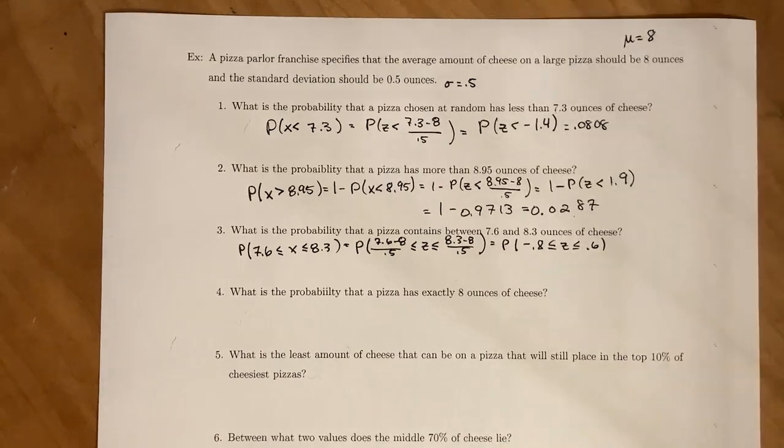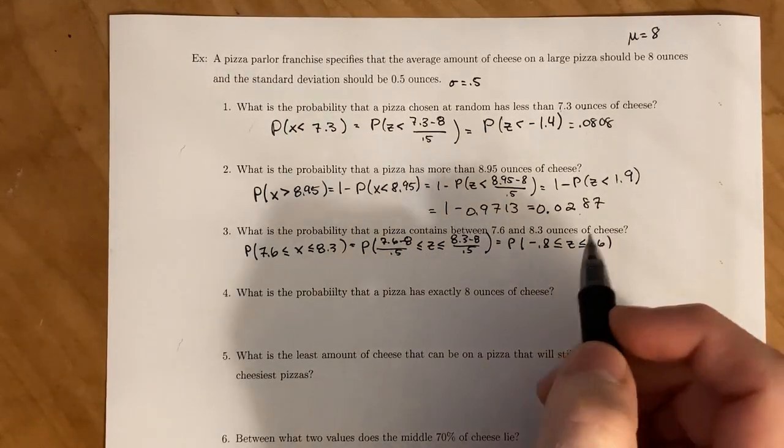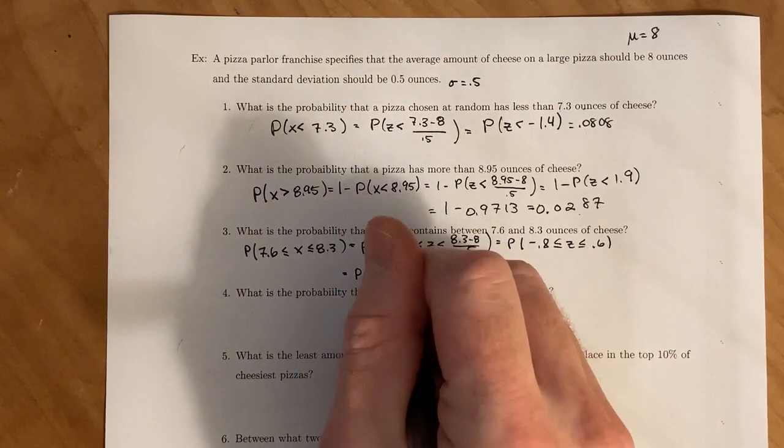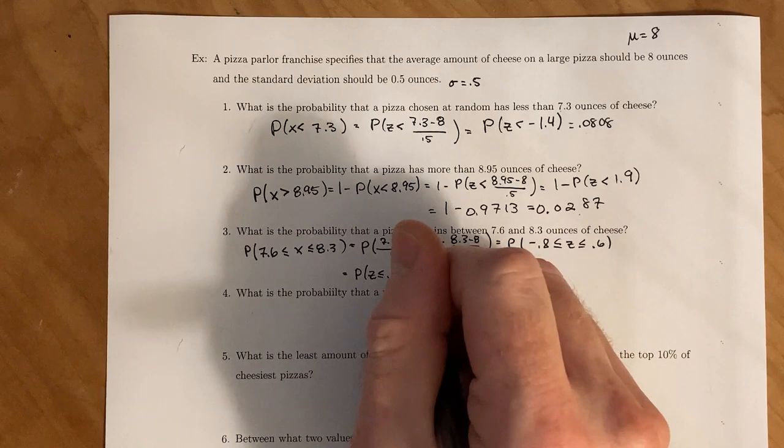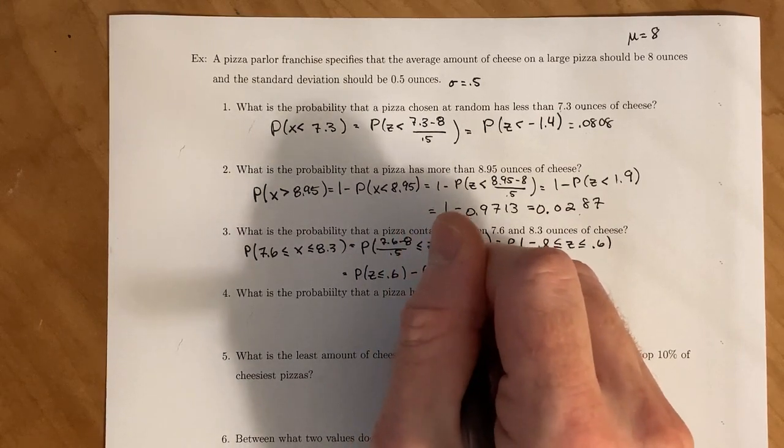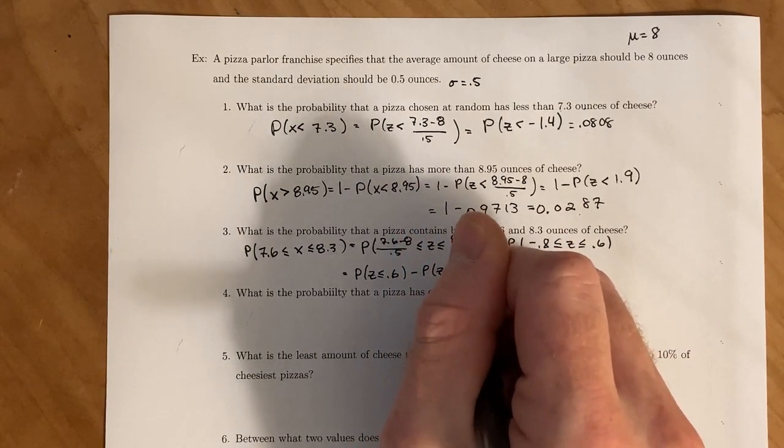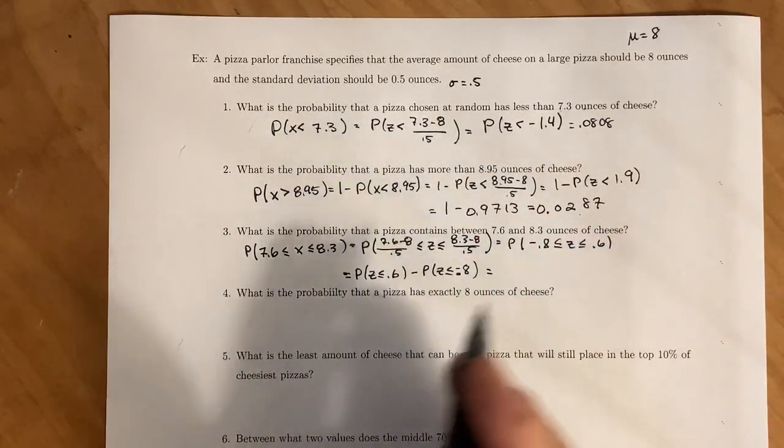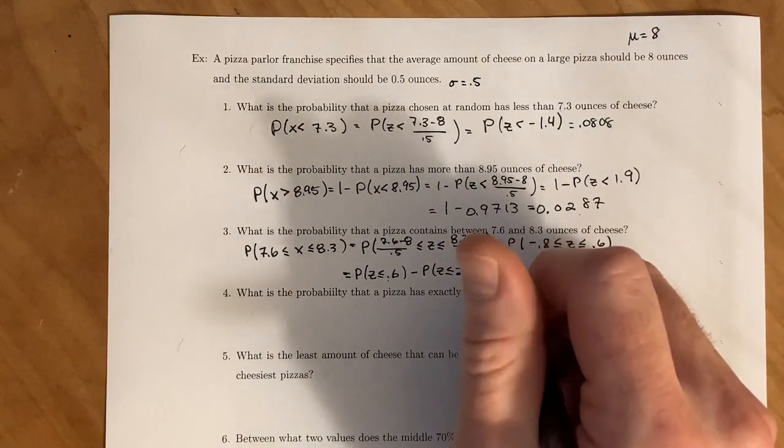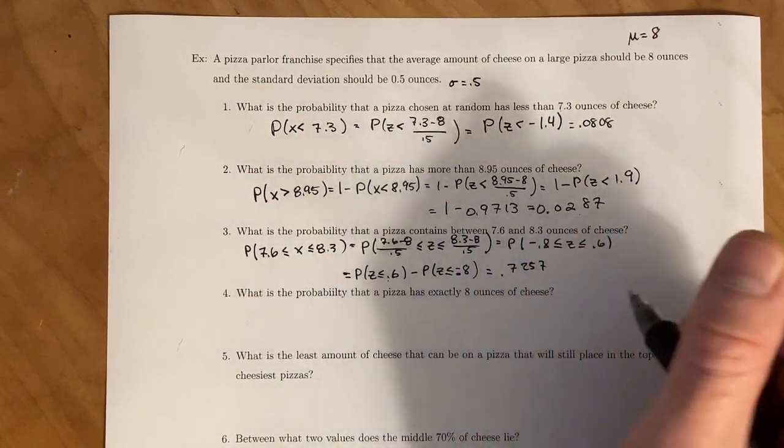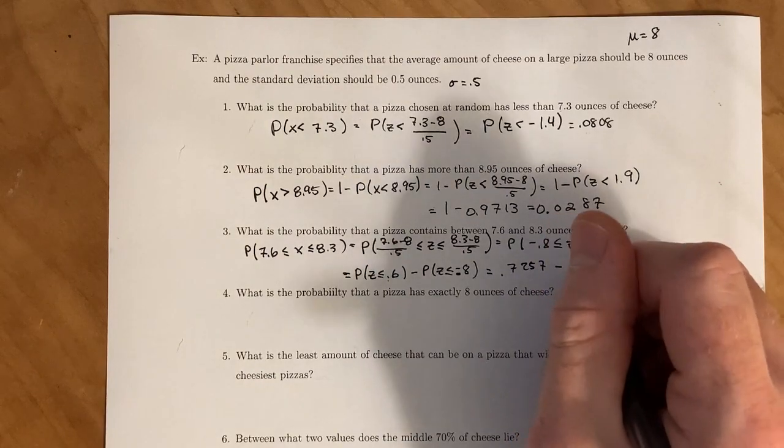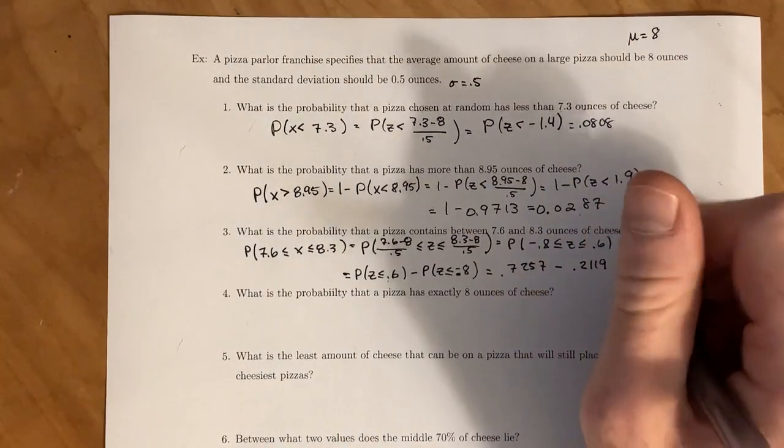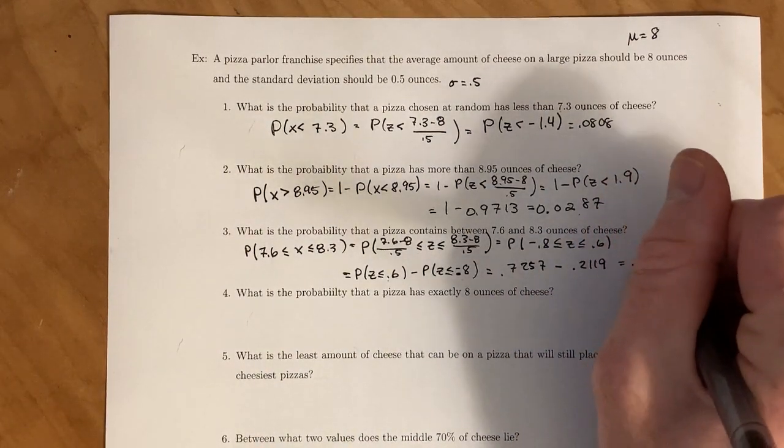Since we are looking in between, we first find the probability that z is less than or equal to the larger one, minus the probability that z is less than or equal to the smaller z value. If we go to our chart for this first one, we should be getting 0.7257. And for the second one, we should be getting 0.2119. Then you take the difference of the two, which gives you 0.5138.